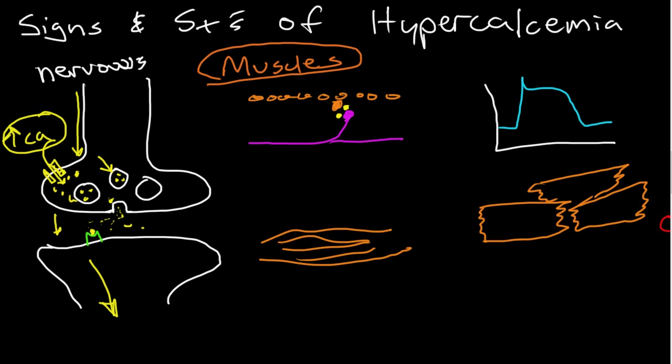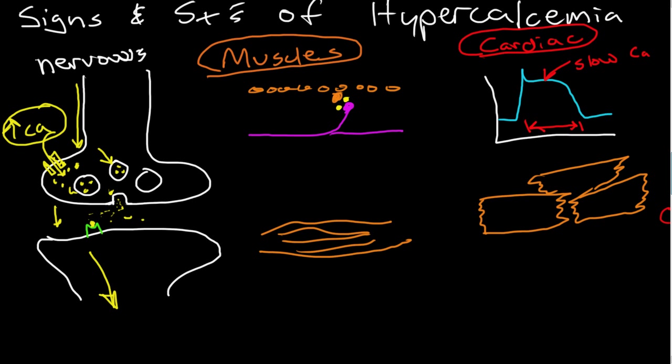The third area is in the myocytes in the heart. Calcium plays a critical role in maintaining the prolonged action potential that is characteristic of myocardiocytes because of the sustained action potential from the slow calcium channels. These are the three main areas where we see effects from hypercalcemia.